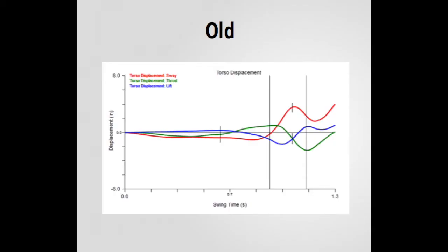This is torso displacement. How much in red is how much it's swaying toward or away from the target. Thrust is toward the ball or away from the ball, and then lift is how much it's moving up and down. What we noticed here is that second vertical line almost all the way over to the right. The torso, as it's crossing that line, sway is going down substantially. So the person is swaying back away from the target and has very little lift. You'll notice right after impact, the lift, the blue line, starts going down, so that person is dropping down.